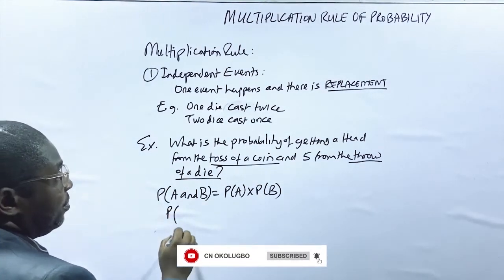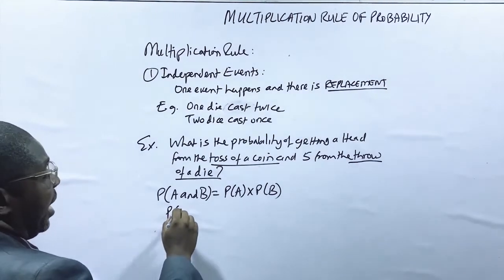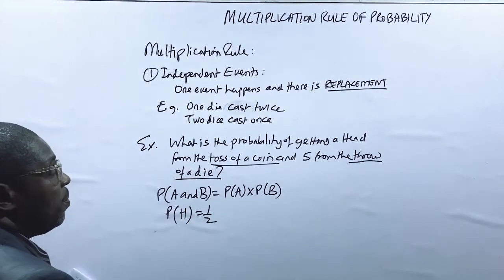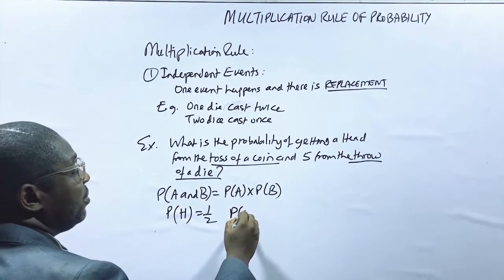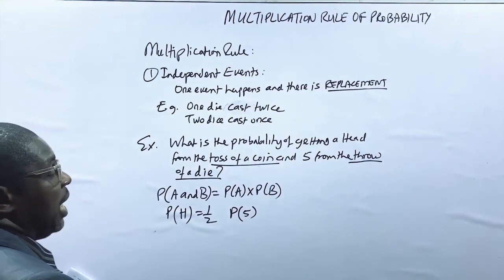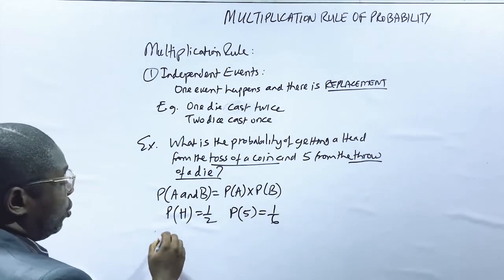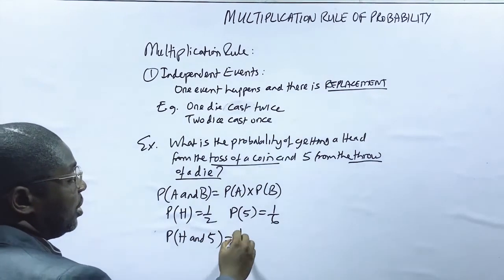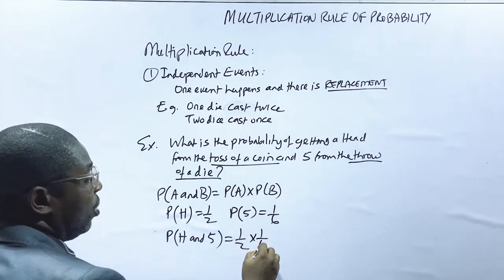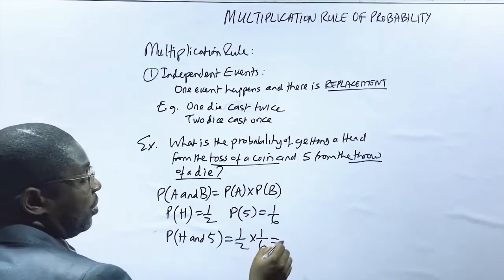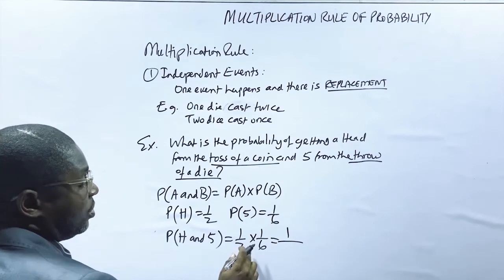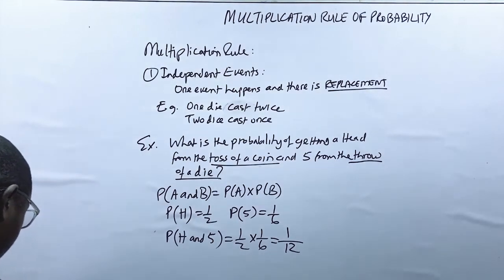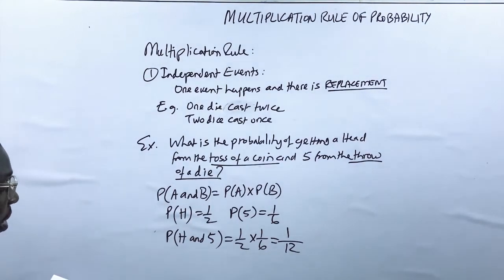The probability of getting a head is one over two, and the probability of getting a five from the throw of a die is one over six. So the probability of head and five is one over two times one over six, which equals one over twelve. This is the probability of two independent events.